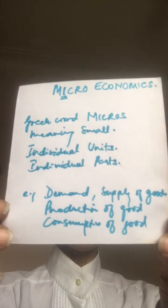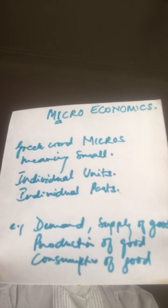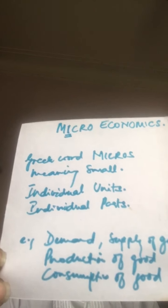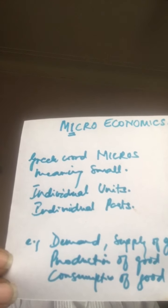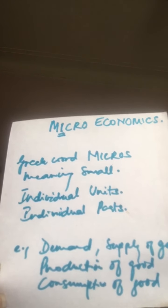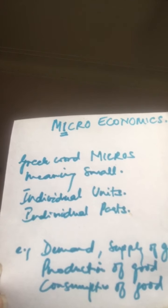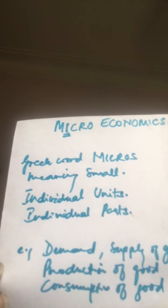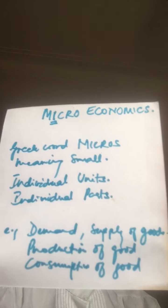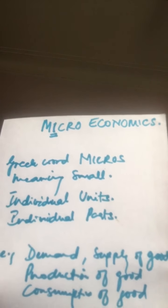Microeconomics — the word 'micro' is derived from the Greek word 'mikros,' which means small. So when we study economics in parts, it is known as microeconomics. It deals with individual parts, individual units. For example, demand for a product or supply of a product — all this comes under microeconomics. I've underlined 'I' in micro — 'I' is for individual.